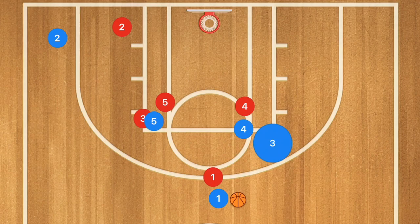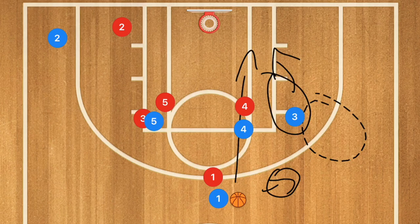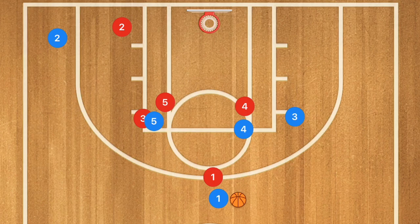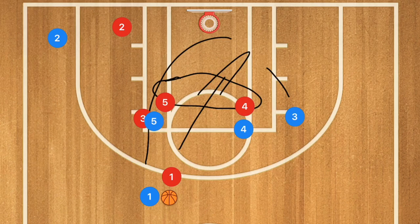If player 3 doesn't pop out and starts cutting down towards the rim, player 1 needs to lob the ball to him. Player 1 can take a dribble or two to his left side so that he has a better passing lane to player 3. Player 4 and 5 could cut off that pass, but if it's a high enough lob, you can get it to player 3 even easier.